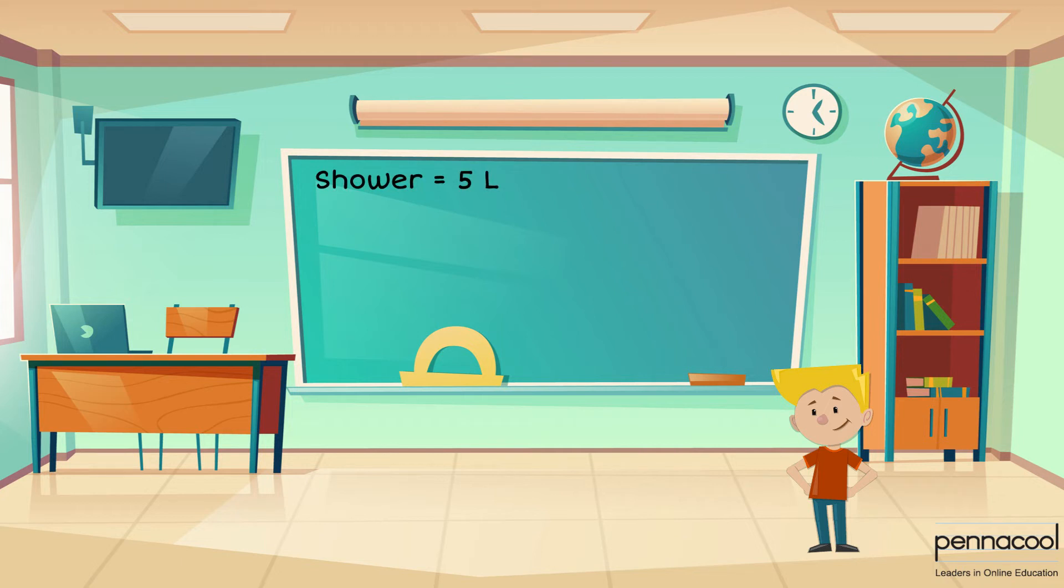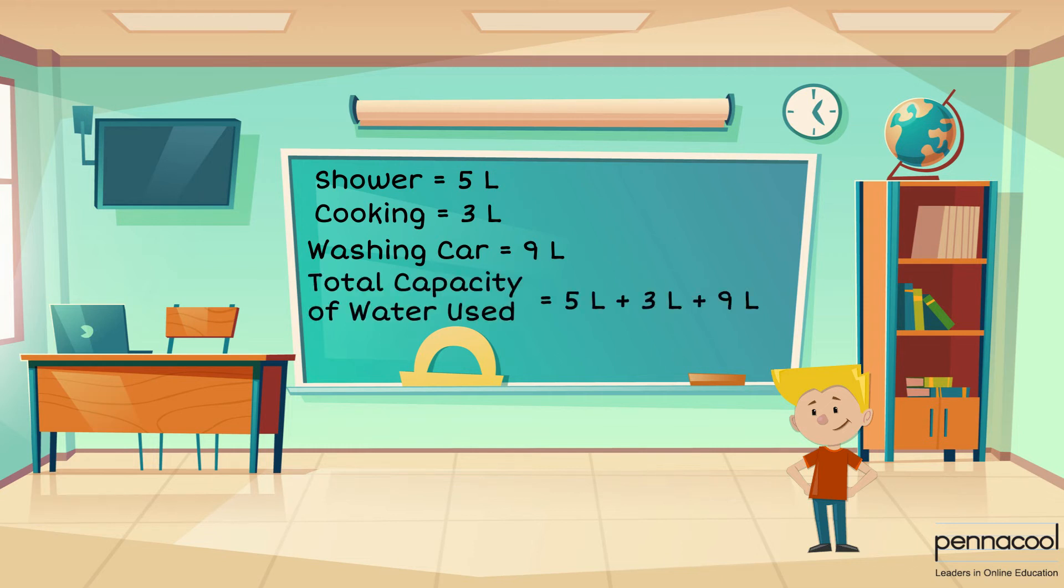If 5 litres of water are used for a shower, 3 litres are used to cook and 9 litres are used to wash the car, how many litres of water would be used for the entire day? The capacity of water used for each task can assist us to find the total used for the day. The individual values of capacity can be summed to work out the total for the day. The water used for the entire day is equal to 17 litres.